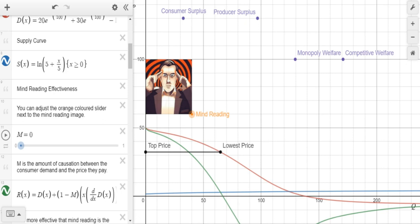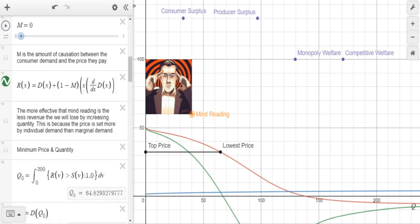If you have a high demand, the more amount of mind reading, the higher the price that you will be charged. Our marginal revenue curve right here is affected by the amount of mind reading we are using. The more effective that mind reading is, the less revenue that we will lose by increasing quantity. This is because the price is set more by individual demand than marginal demand. We're able to charge those people a different price, which is less connected with the price the marginal consumer will pay. Thus, the lost revenue is less.